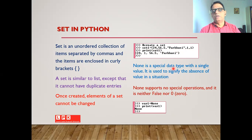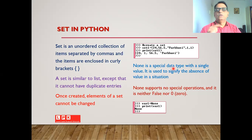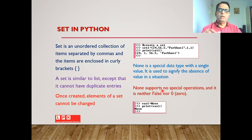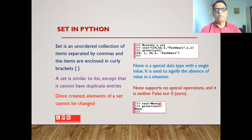None is also a special data type with a single value. It is used to signify the absence of a value in a situation — if you do not want to specify any value to a variable, you can use None. None supports no special operations, and one has to remember that None is neither False nor zero. For example, if variable1 = None and you print it, None will be displayed on the screen.